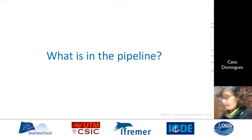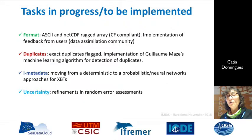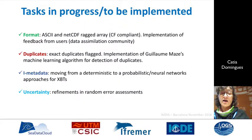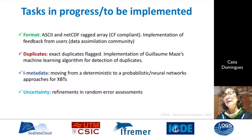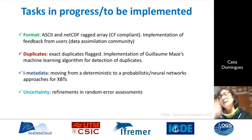Now is the more exciting part: the work being done to release a new version where we are going to start having coordinated quality control applied. In terms of format, we are making improvements based on feedback from the data assimilation community — anyone who uses the data and would like to give us feedback is very welcome. For duplicates, we have flagged the exact duplicates and we would like to implement Guillaume May's machine learning algorithm to make detection more efficient.